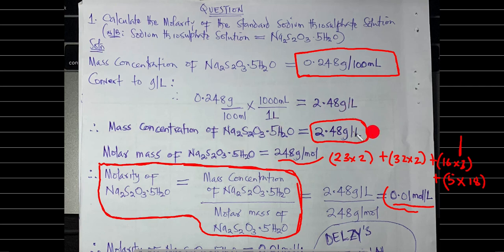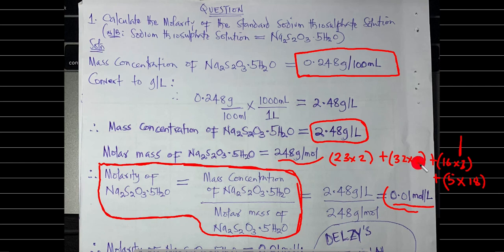The formula to get molarity is: molarity = mass concentration ÷ molar mass. The molar mass of sodium thiosulfate (Na₂S₂O₃·5H₂O) is calculated as: 2×23 (sodium) + 2×32 (sulfur) + 3×16 (oxygen) + 5×18 (water) = 248 grams per mole. So molarity = 2.48 ÷ 248 = 0.01 mol/L. This is the answer for question one: the molarity of sodium thiosulfate is 0.01 mol/L.